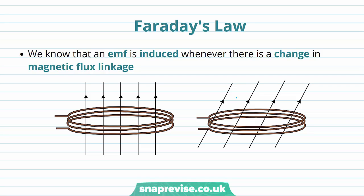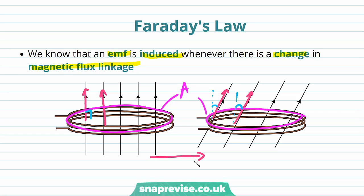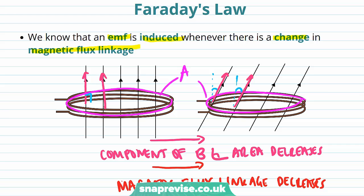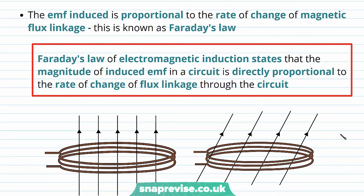We're now going to define an important law called Faraday's law. We know that an electromotive force is induced whenever there is a change in magnetic flux linkage. For example, in this case the magnetic field has been rotated, and as it's rotated, the component of the magnetic flux density that is perpendicular to the area decreases, and therefore the magnetic flux linkage also decreases. This causes an EMF to be induced, and the EMF that is induced is proportional to the rate of change of magnetic flux linkage. This is known as Faraday's law of electromagnetic induction, which states that the magnitude of induced EMF in a circuit is directly proportional to the rate of change of flux linkage through the circuit.